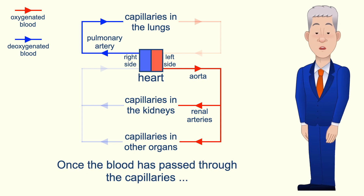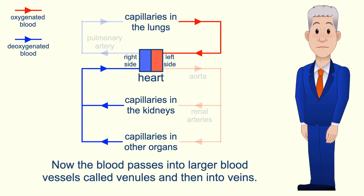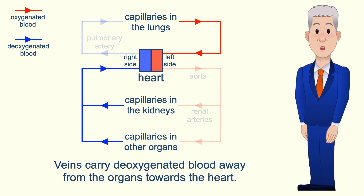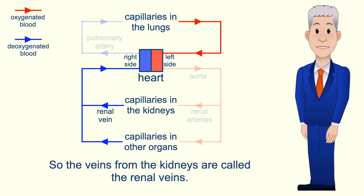Once the blood has passed through the capillaries the blood pressure is much lower and the blood is no longer surging in pulses. The blood passes into larger blood vessels called venules and then into veins. Veins carry deoxygenated blood away from the organs towards the heart, and veins are named based on the organ that they come from. So the veins from the kidneys are called the renal veins.